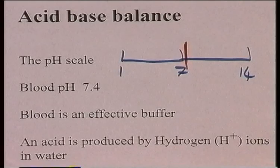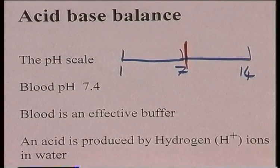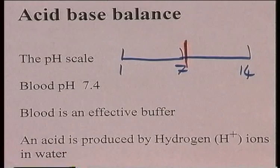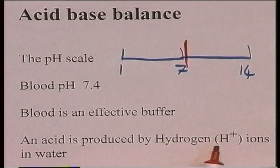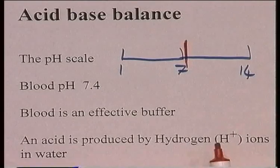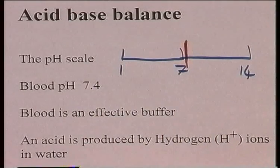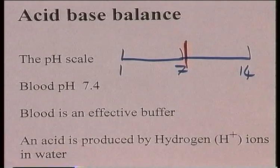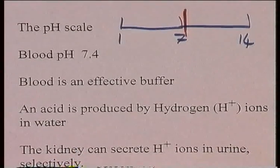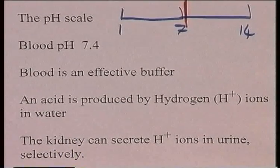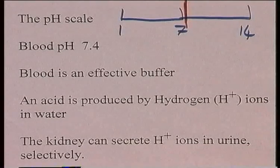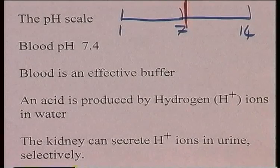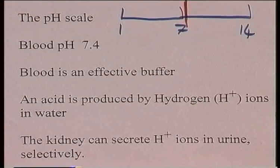An acid is a product which will release free hydrogen ions, H+ ions, in water. So when there are hydrogen ions in the blood, the pH will fall. The kidney can secrete hydrogen ions selectively. So if the blood becomes too acidic, the kidney will secrete hydrogen ions, and therefore the blood will become less acidic, maintaining blood pH at the optimum 7.4 level.